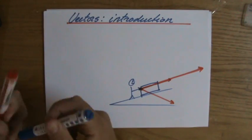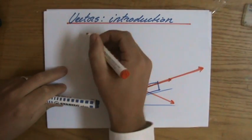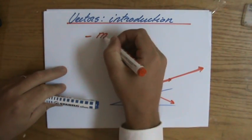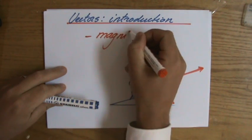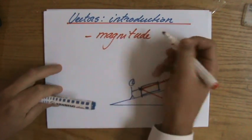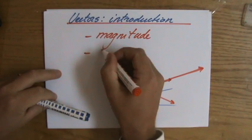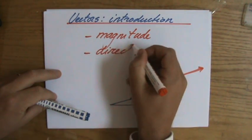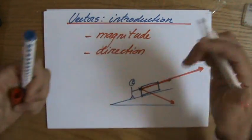What is important about a vector is that you realize that a vector always has a particular magnitude, a particular size, and also a direction. So it has a magnitude and a direction.